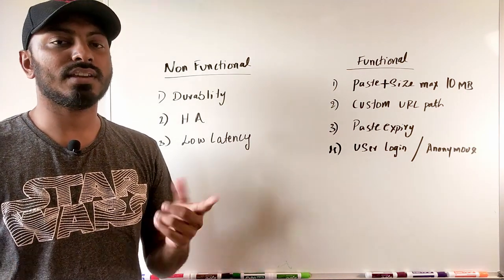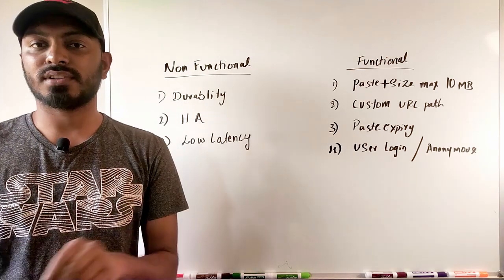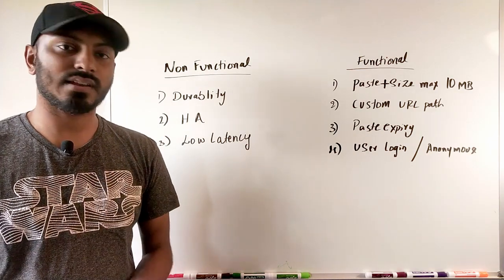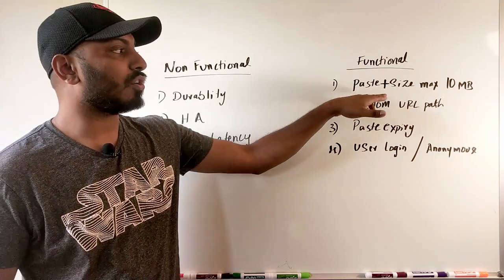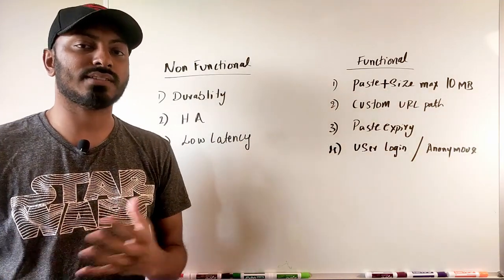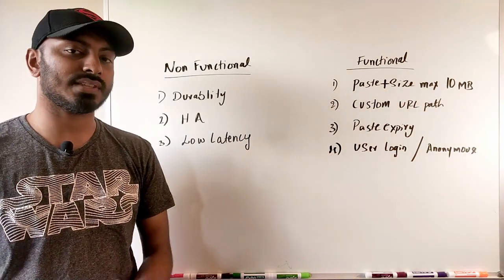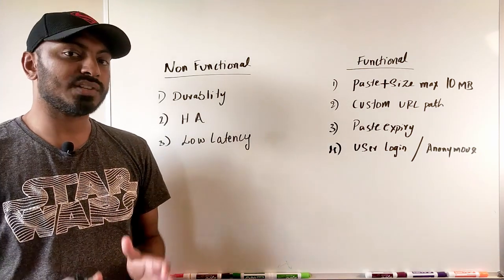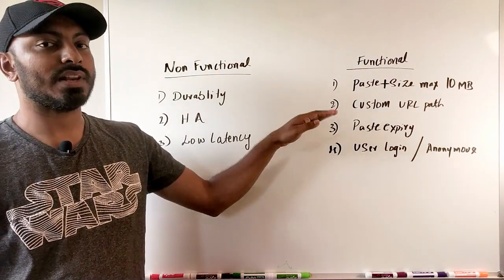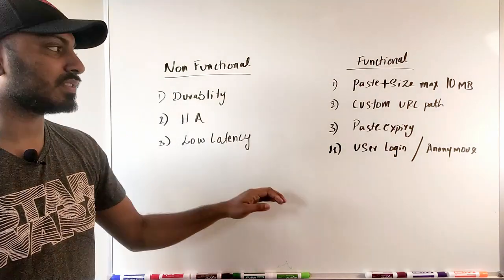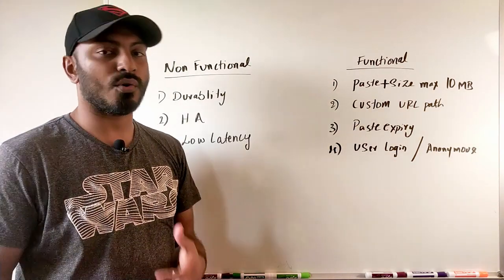The first business requirement is that users should be able to paste text and share it with other users using a customized or auto-generated link. There is also a limit — the maximum text size should be 10 MB. Business requirements will drive the system design, so it's very important to properly gather all of them. The second requirement is that the user should be able to have their own custom URL.